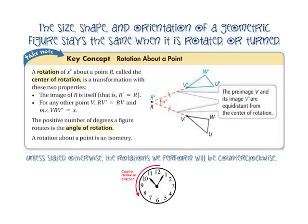The positive number of degrees a figure rotates is called the angle of rotation. A rotation about a point is an isometry. Unless stated otherwise, the rotations we perform will be counterclockwise.